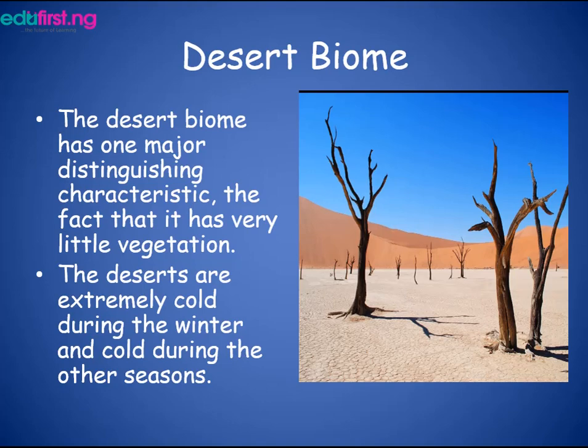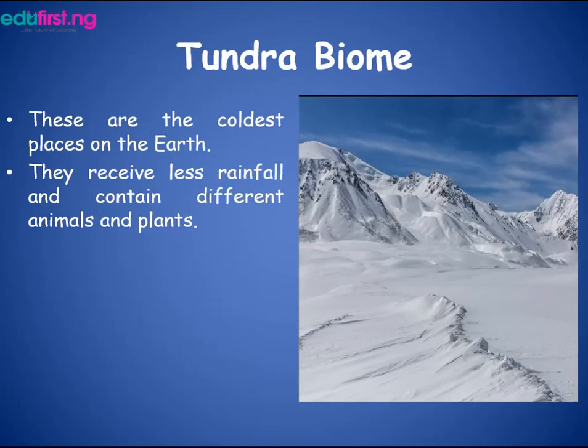The next type of biome is the tundra biome. These are the coldest places on the earth — they receive less rainfall and contain different animals and plants. They are also called cold deserts, but they do have animals and plants, unlike the desert biome.